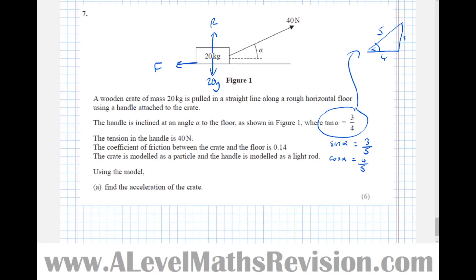So now it says the tension in the handle is 40 newtons. So that's just describing the diagram. The coefficient of friction between the crate and the floor is 0.14 right mu equals 0.14 and says the crate is modeled as a particle and the handle is modeled as a light rod.